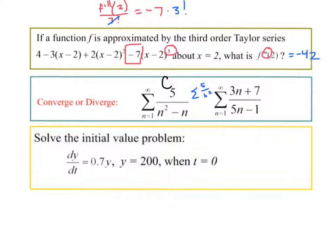This one diverges, I would say, by the nth term test. But again, you could use the high-powered stuff on top and bottom and make a series of 3 fifths, which is divergent because it's just adding 3 fifths over and over and over again.